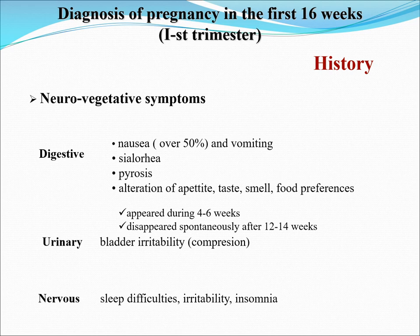There are neurovegetative symptoms more often associated with pregnancy, the most common being nausea. Over 50% of pregnant women would experience nausea. It may be accompanied by vomiting, sialorrhea, thyrosis, and any alteration of appetite, taste, smell, and food preferences. This usually appears during 4 to 6 weeks and would spontaneously disappear after 12 to 14 weeks. There would be bladder irritability due to compression, and in the nervous system, there would be sleep difficulties, irritability, and insomnia.